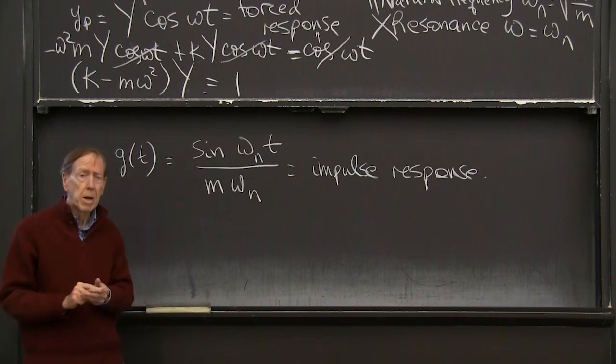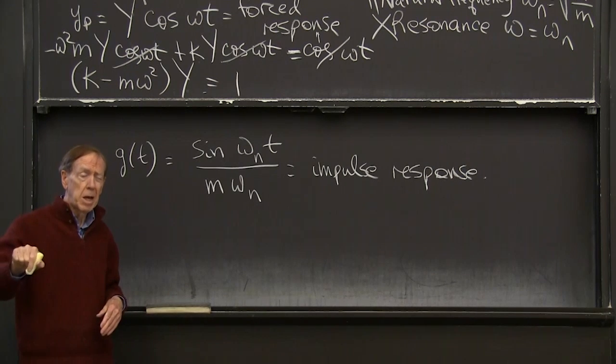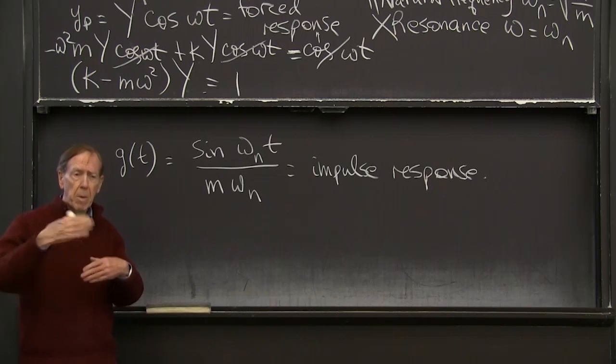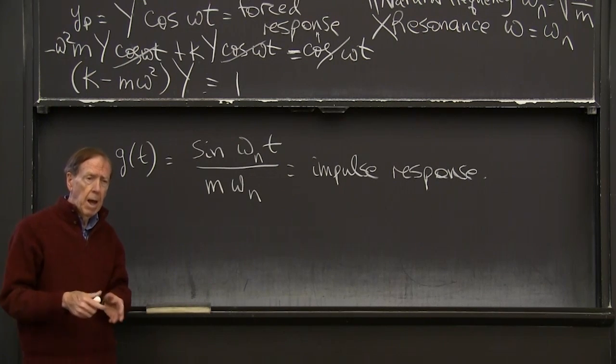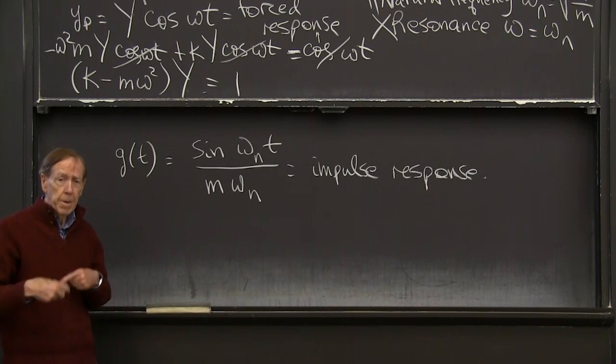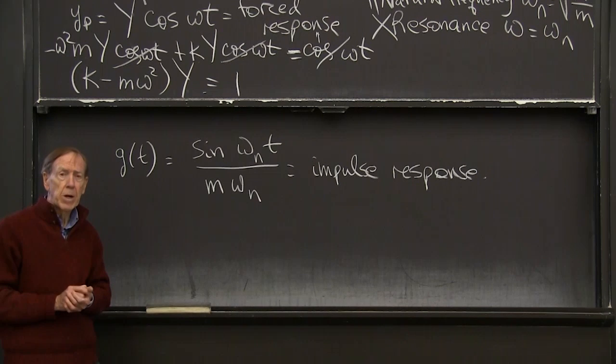We'll see that point. So we've introduced forcing functions cos omega t, where the particular solution was a multiple of cos omega t. And now we've introduced the forcing function delta, the delta function, where the response is a sine function.